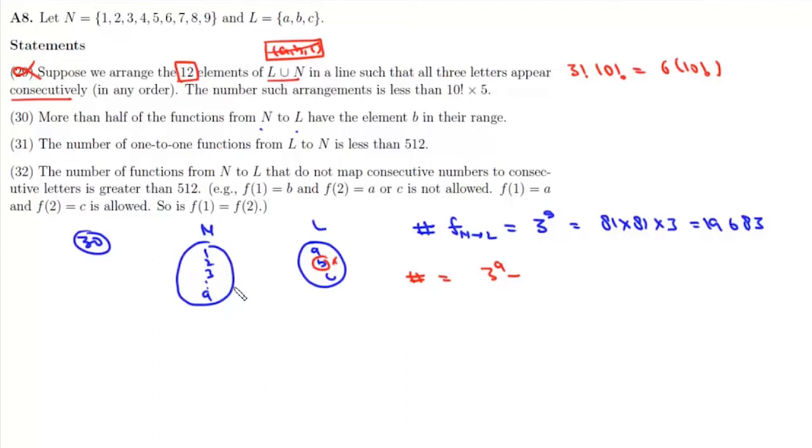So for all the elements we have only two choices, either A or C. So total number of such functions will be 2^9 and this is 19,683 - 512. Now this is 19-something which is much greater than half the value of total functions. So that means this statement 30 is correct.